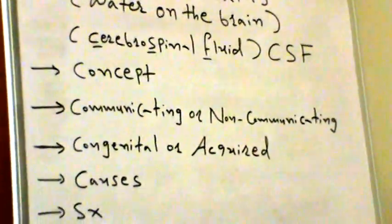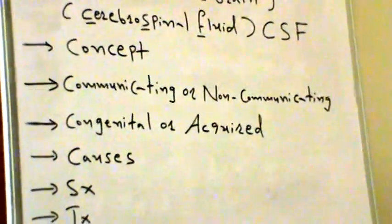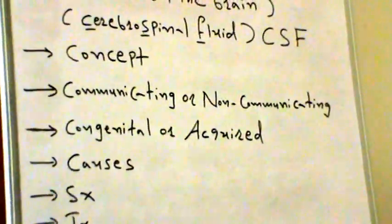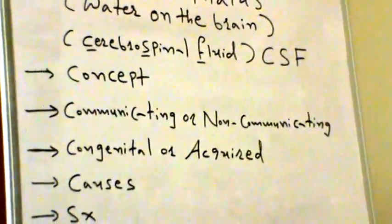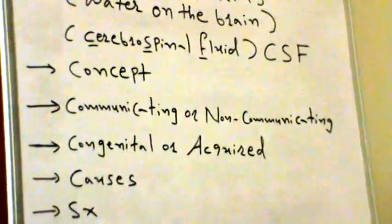Communicating is when the CSF is able to flow from ventricle to ventricle and circulate in its normal procedure. However, the problem is one of reabsorption at the subarachnoid cisternae, also referred to as the arachnoid granulations.